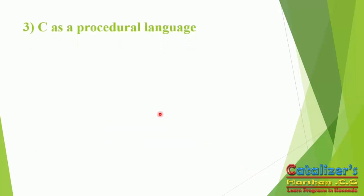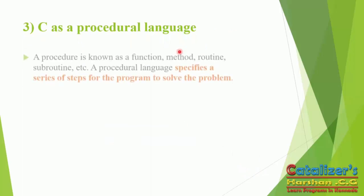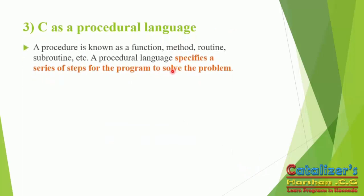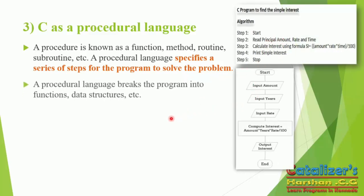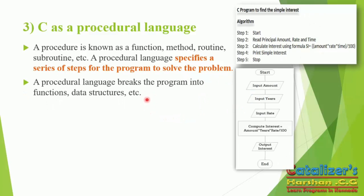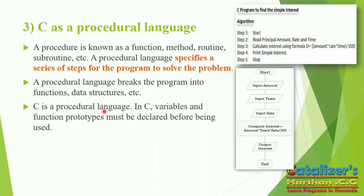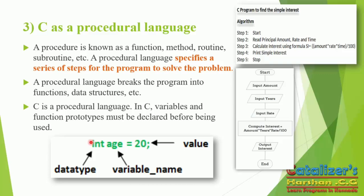C has a procedure-oriented language. A procedure is known as functions, methods, routines, subroutines, etc. A procedure language specifies a series of steps for the program to solve problems. A procedure language breaks the program into functions and data structures. In C, variables and function prototypes must be declared before being used.